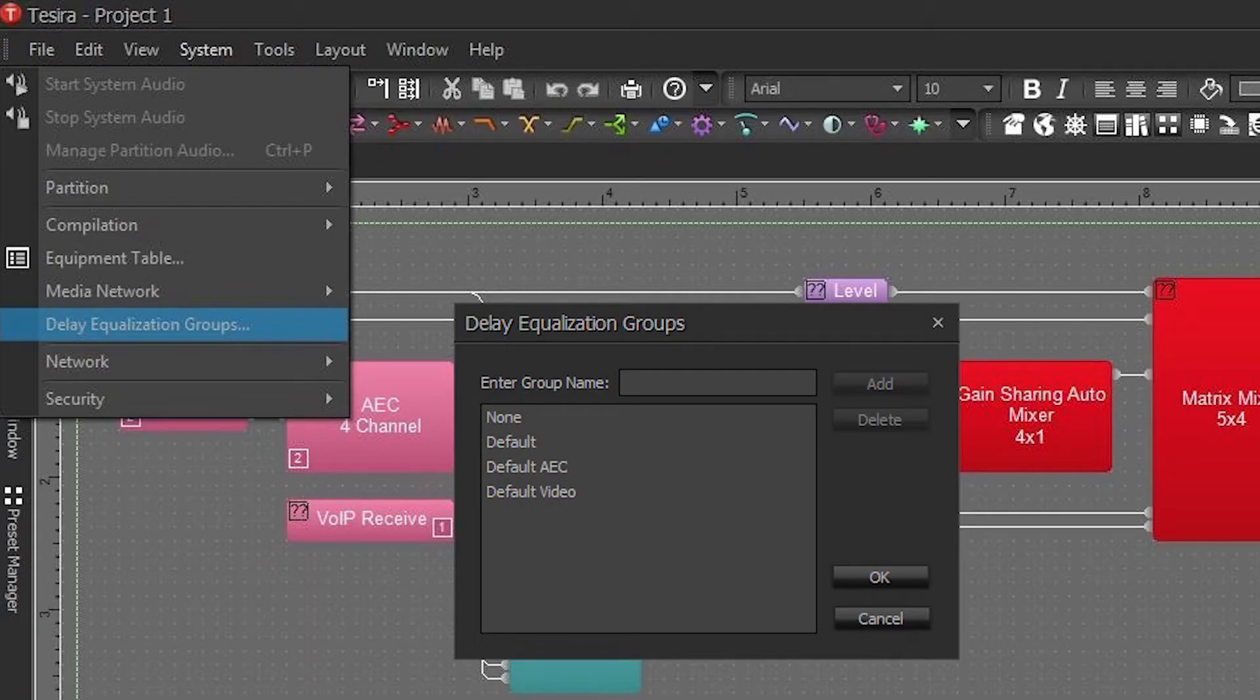Delay equalization can be found under the Systems tab. Tisera assigns each path within a partition to a delay equalization group by default, guaranteeing synchronization within signals that have different propagation times.